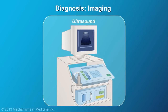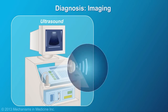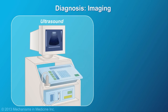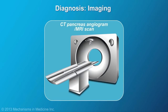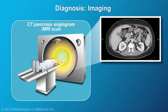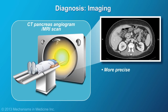Initial testing may involve an abdominal ultrasound or CT scan. Ultrasound uses sound waves to create an image of the structures inside the body, but its information is sometimes limited. A CT pancreas angiogram scan with IV contrast provides more information – it is more precise and can identify smaller tumors. It can also give an indication of whether the cancer has spread to other organs and what extent of blood vessel involvement is present.